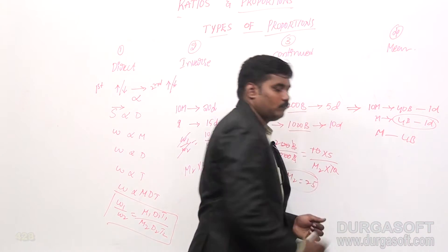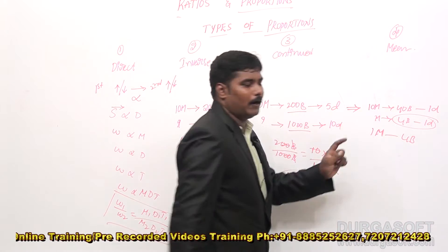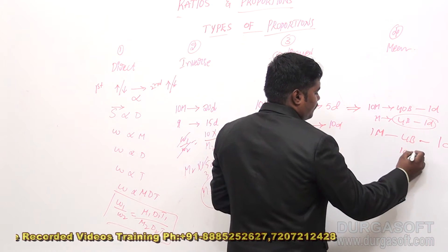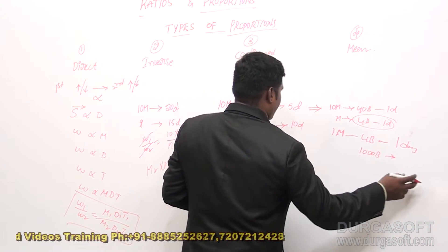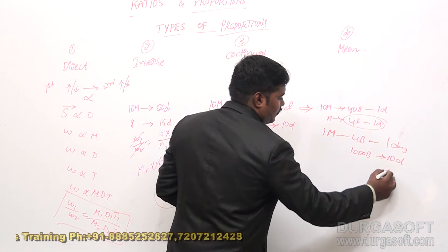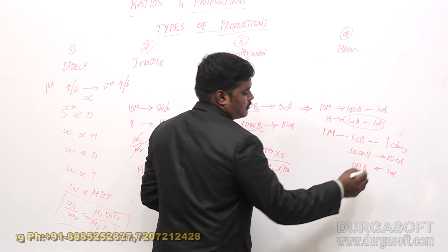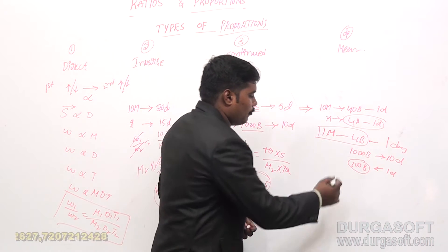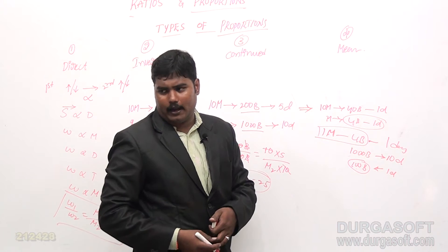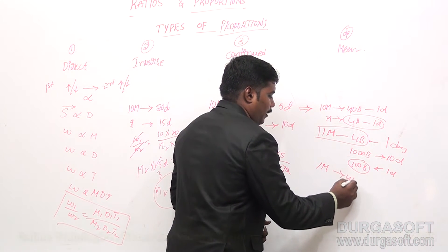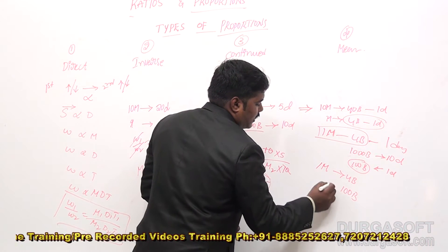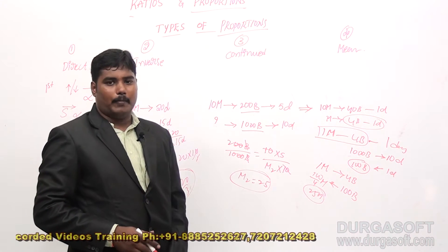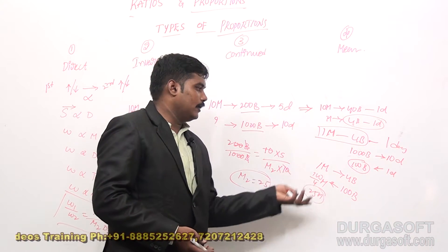When you get that 1 monkey can eat 4 bananas in 1 day, then how many monkeys can eat 1000 bananas in 10 days? In 1 day we should complete 100 bananas. To complete 100 bananas, how many monkeys are required? 100 divided by 4 is 25 monkeys. So the answer is 25 monkeys. You can get the answer by using the chain rule or unitary method — chain rule is nothing but the unitary method.